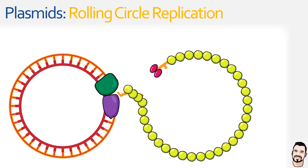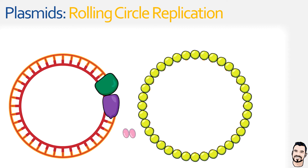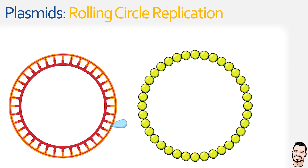This all continues until a fully synthesized daughter strand of DNA is produced. The RepA protein then joins the two ends of the single-stranded DNA and dissociates. At this point, DNA polymerase III and DNA helicase have also completed their job and dissociate from the double-stranded plasmid. All that remains for the first plasmid is for DNA ligase to patch up the sugar-phosphate backbone and join the two ends together.